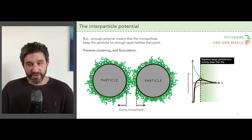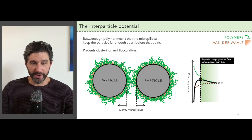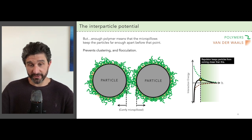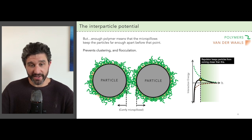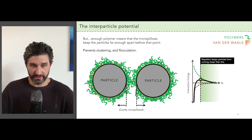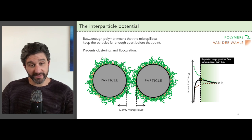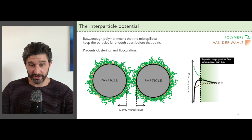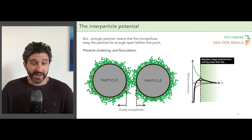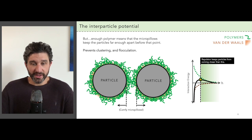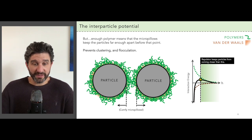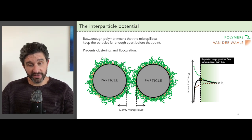If you look at the full shape of the curve we've traced out, we see that it has a positive repulsive hump at medium distance before it dives down to very strong negative, or attractive, values at short distance. This hump represents the effect of the micropillows in buffeting the two particles away from each other when they try to get too close. This is a crucial feature that we need to see in the interparticle potential to know that we've designed a dispersion where flocculation is minimized.